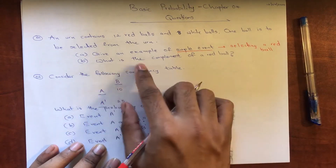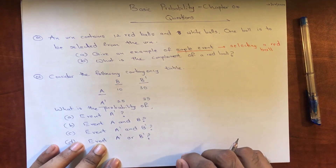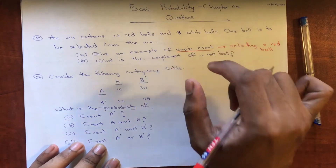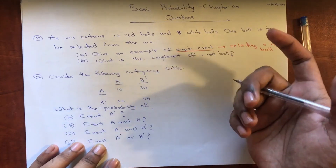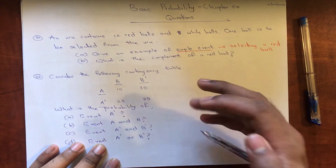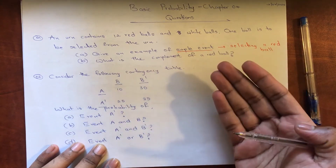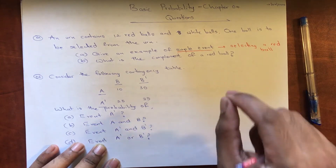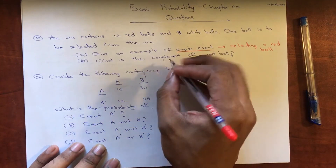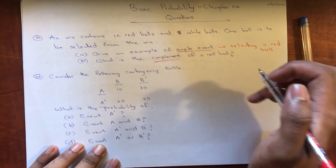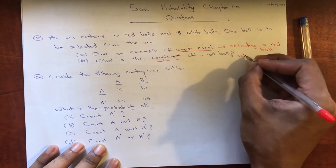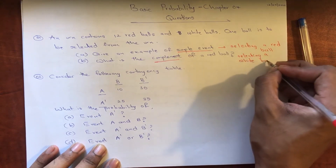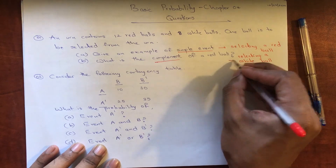Then they ask what is the complement of a red ball. The complement of an event means all the events that are not part of that particular event. For example, complement of A means all events not part of A. So the complement of a red ball would be selecting a white ball. It's as simple as that.